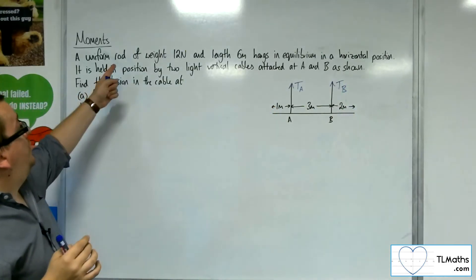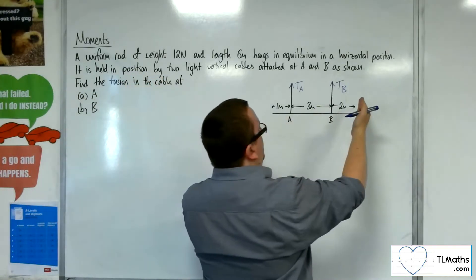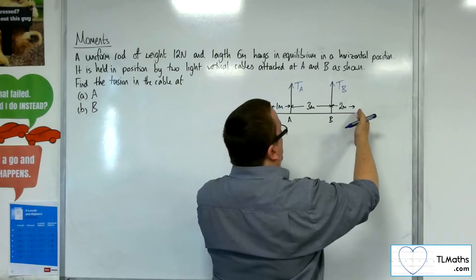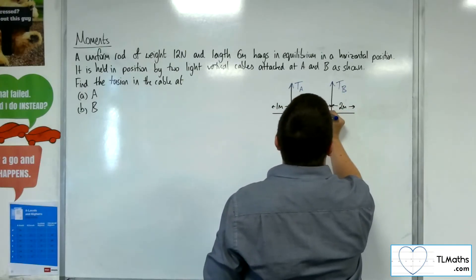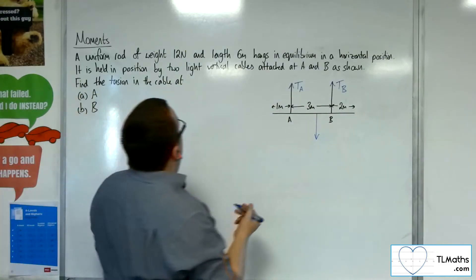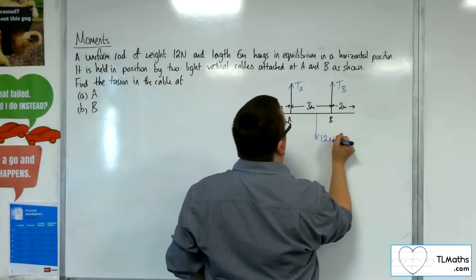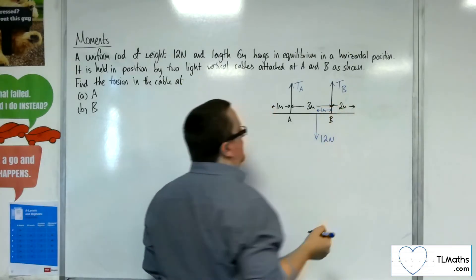Now we know that the uniform rod has weight 12 newtons. The whole stretch of the rod is 6 meters. So that must mean that the weight must work at the center of mass, 12 newtons. And this is 1 meter away from B.